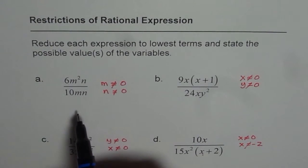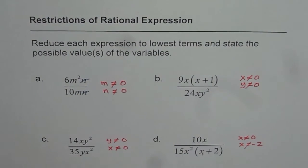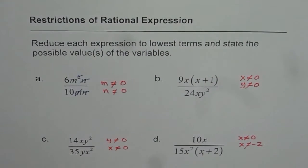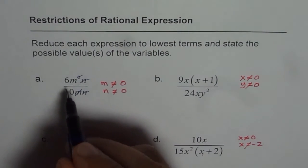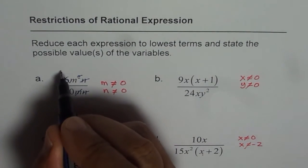Now, we have to look for common factors. In the first one, N and N are common, we can cancel. M squared divided by M will be just M. So we can cancel this out. 6 and 10, both can be divided by 2. So if I divide this by 2, I get 3.